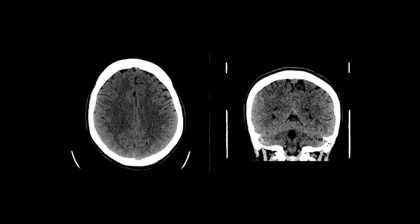Here are two images from the same patient's CT examination. On the left of your screen you have an axial slice through the level of the mid-vault. This is a coronal slice and you should look at this as if the patient was looking out the screen towards you.